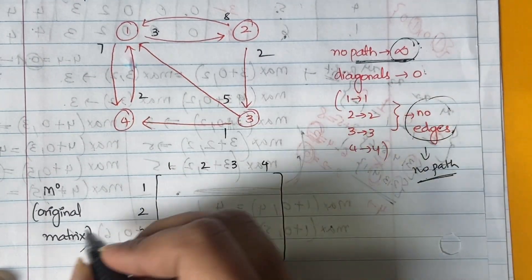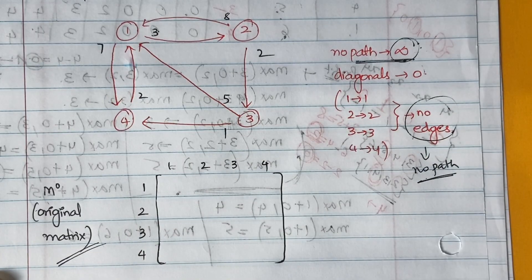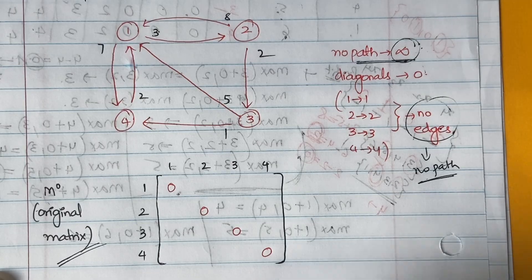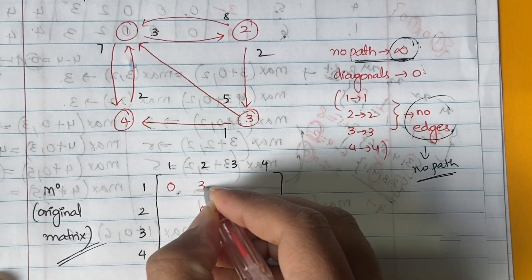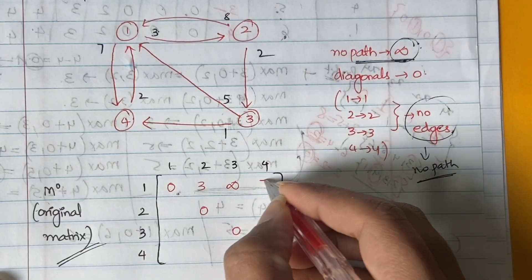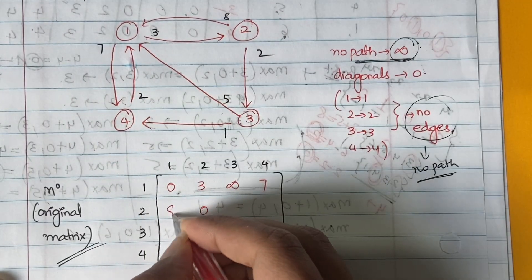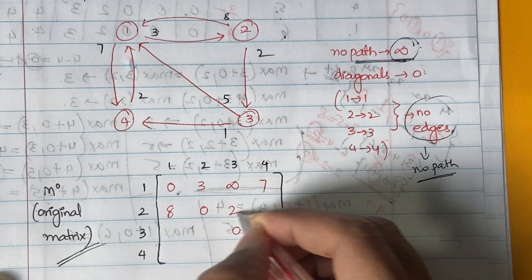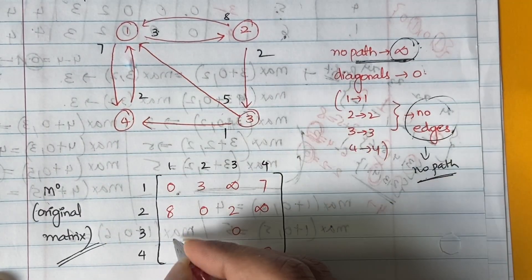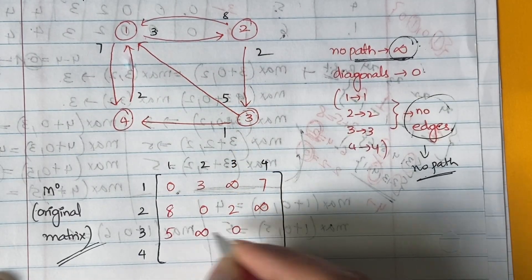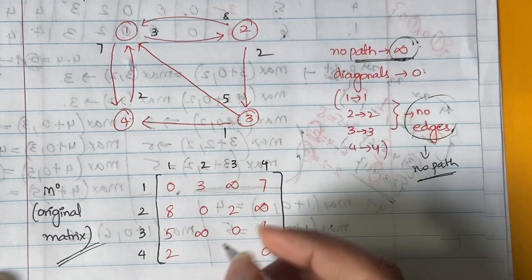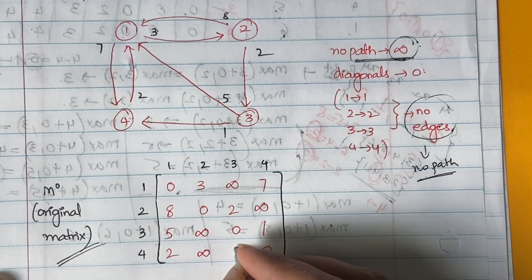Let us fill our original matrix M0 according to the graph and these rules. Diagonal elements: 1-1=0, 2-2=0, 3-3=0, 4-4=0. From 1 to 2 the weight is 3; 1 to 3 no path so infinity; 1 to 4 weight is 7. From 2 to 1 weight is 8; 2 to 3 weight is 2; 2 to 4 no path so infinity. From 3 to 1 weight is 5; 3 to 2 no path so infinity; 3 to 4 weight is 1. From 4 to 1 weight is 2; 4 to 2 no path so infinity; 4 to 3 no path so infinity.